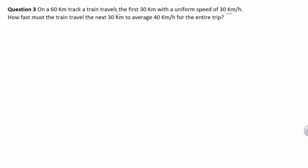Let us now look at our third question. The question states that on a 60 km track, a train travels the first 30 km with a uniform speed of 30 km per hour. How fast must the train travel the next 30 km to average 40 km per hour for the entire trip?